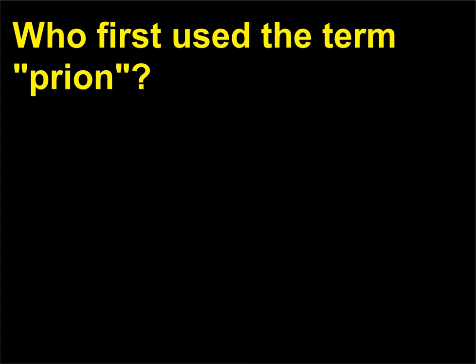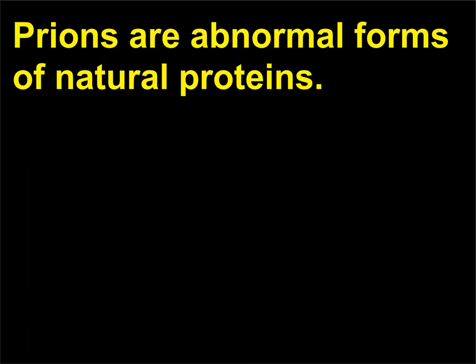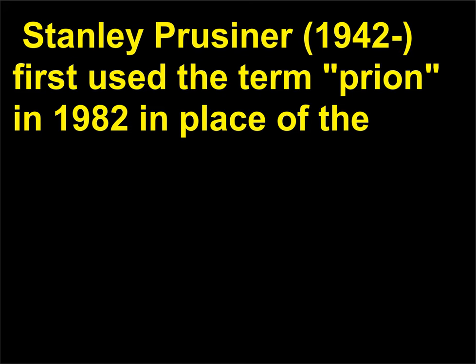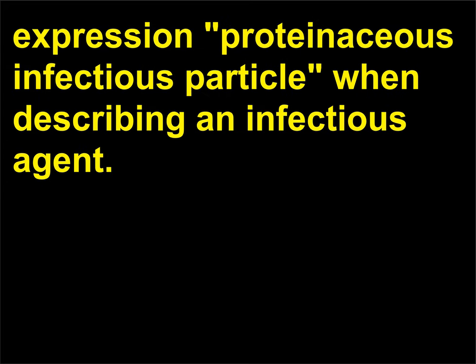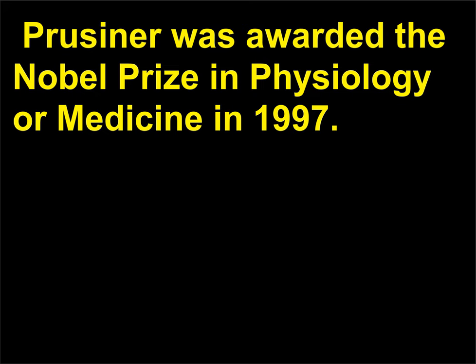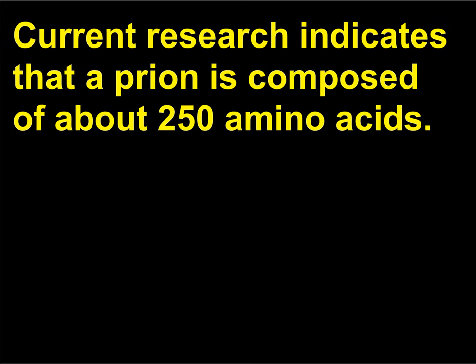Who first used the term prion? Prions are abnormal forms of natural proteins. Stanley Prusiner, born 1942, first used the term prion in 1982 in place of the expression "proteinaceous infectious particle" when describing an infectious agent. Prusiner was awarded the Nobel Prize in Physiology or Medicine in 1997.